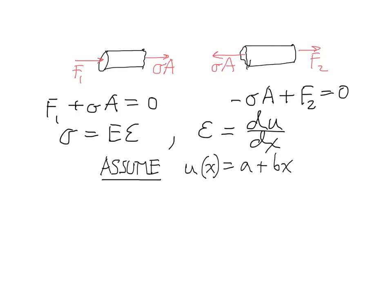u of x equals a plus bx. We can take this a step further though. We can more precisely define displacement in terms of terms that we've already discussed. In particular, the u1 and u2 terms. The displacement at node 1, the left end where x equals 0. And the displacement at node 2, the right end where x equals l.